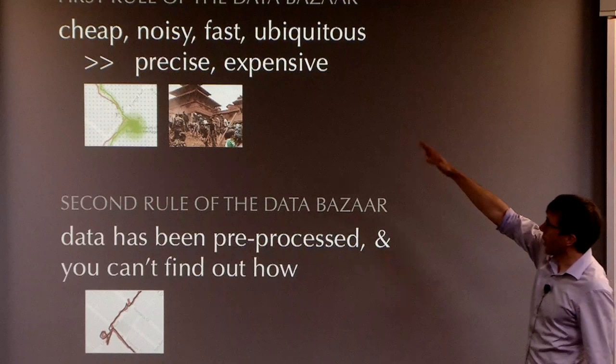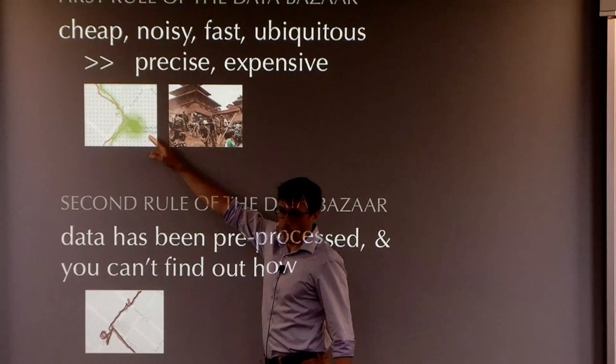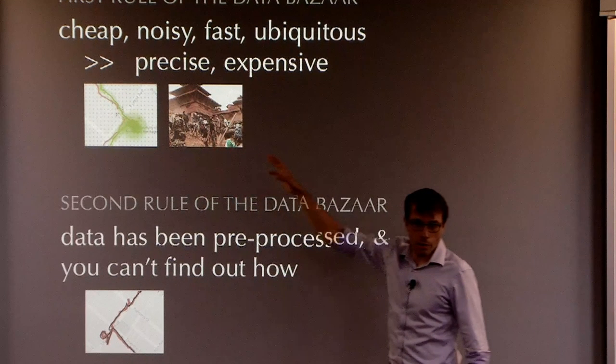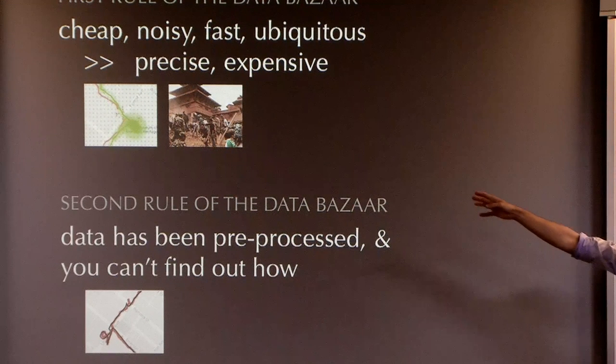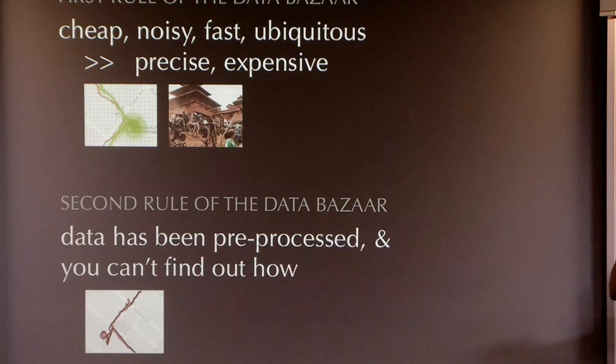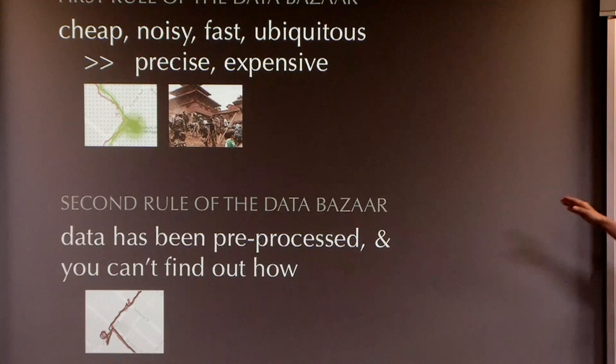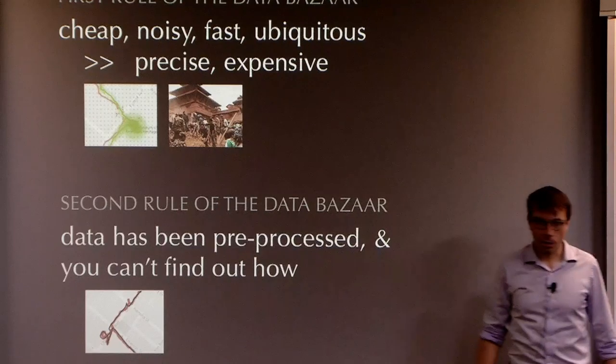So those are the first two lessons. Cheap, noisy, fast beats out precise and expensive. It's why phones have crummy GPS hardware. It's why that Smart Shake system has the potential to get readings from earthquakes in Nepal, whereas the expensive seismographs won't. Second rule, data has been processed and no one will tell you how.